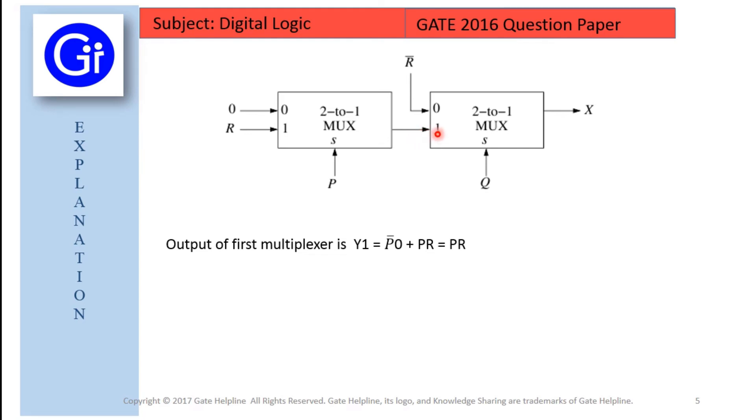So at this point here, for input, select input 1, we have input as PR. And for select input 0, we have input as R bar for the second mux. And the select line here is Q.